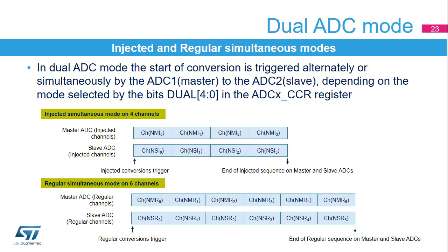In dual ADC mode, conversions can be started either simultaneously or alternately on ADC master and ADC slave. The converted data of the master and slave ADC can be read in parallel by reading the ADC Common Data Register or ADC-X-CDR. Do not convert the same channel on the two ADCs.